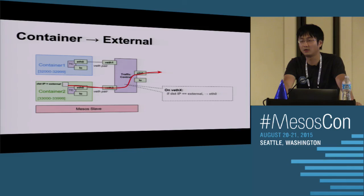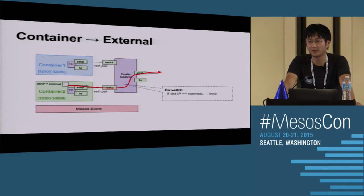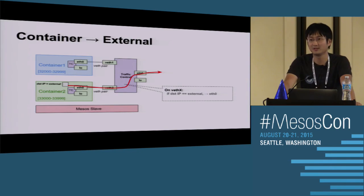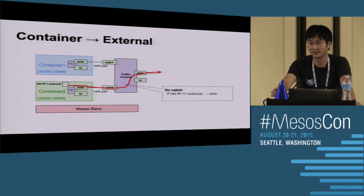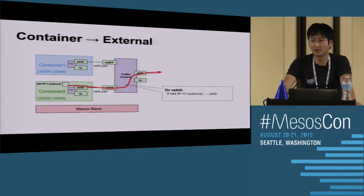Question: is the bandwidth cap a soft or hard cap - can containers use more bandwidth if others aren't using theirs? Answer: it's a hard cap - currently set to one-third of the link speed. No one can exceed that. If no one is using any bandwidth, a container still cannot go beyond its cap. As mentioned, we probably want to use over-subscription to deal with that, so if no one is using their bandwidth, another container could use it to speed up their applications.